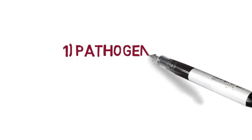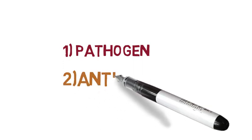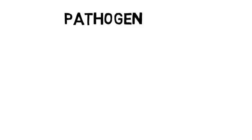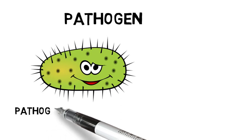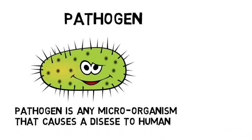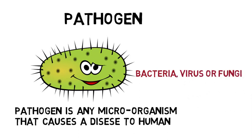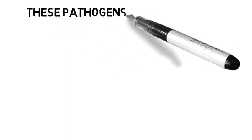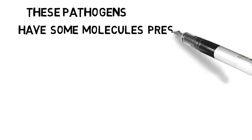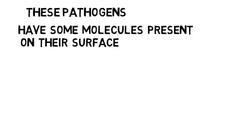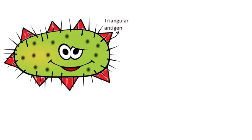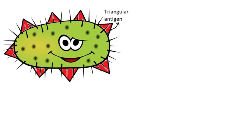For that, let's understand two terms: pathogen and antigen. Pathogen is any microorganism that causes disease to humans — that may be bacteria, virus, or fungi. These pathogens have some molecules present on their surface. These molecules are called antigens.